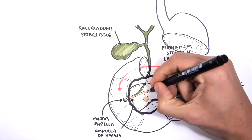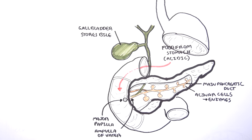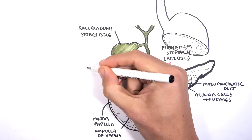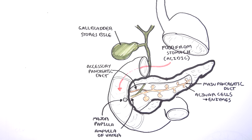The common bile duct and main pancreatic duct converge at the ampulla of Vater before entering the duodenum through the major duodenal papilla. It is also important to know there is an accessory pancreatic duct which has its own separate opening in the duodenum.